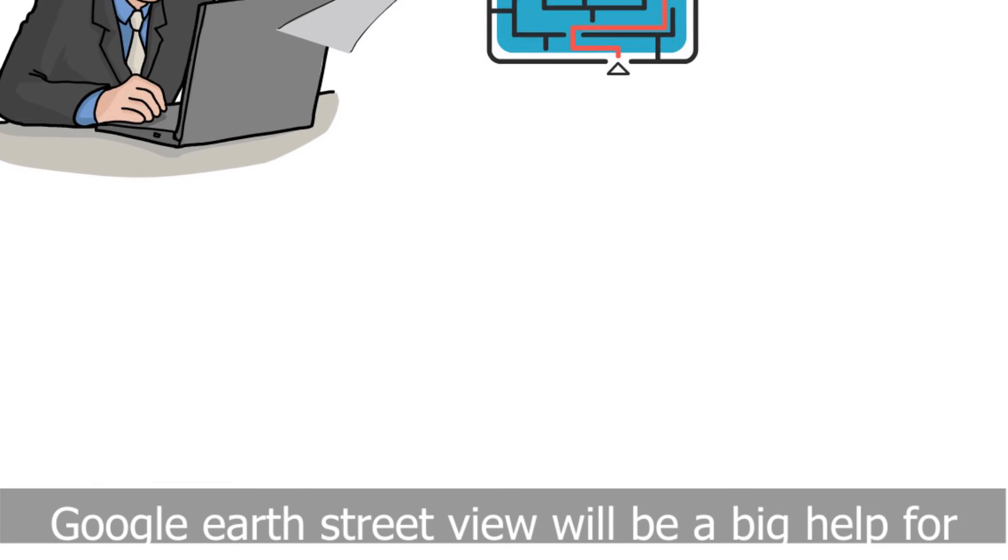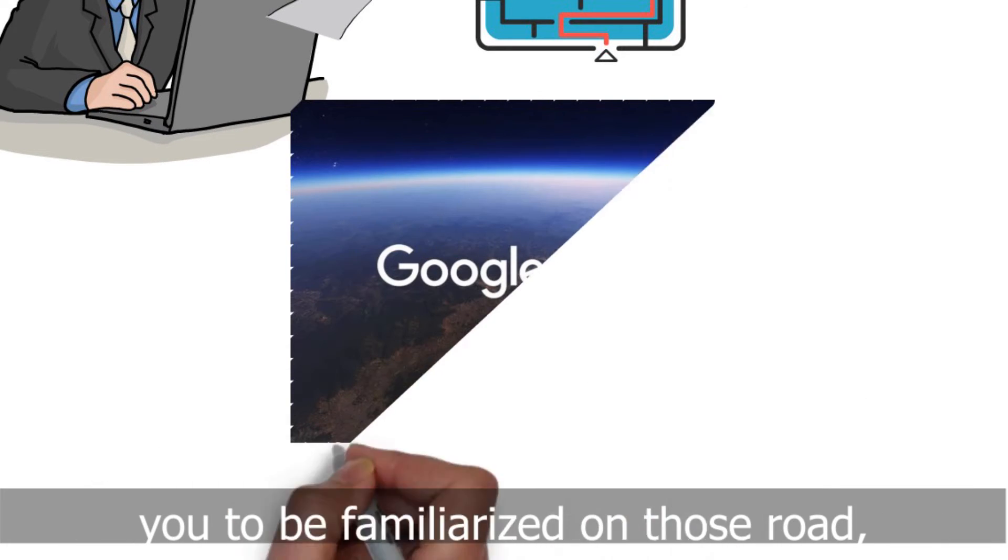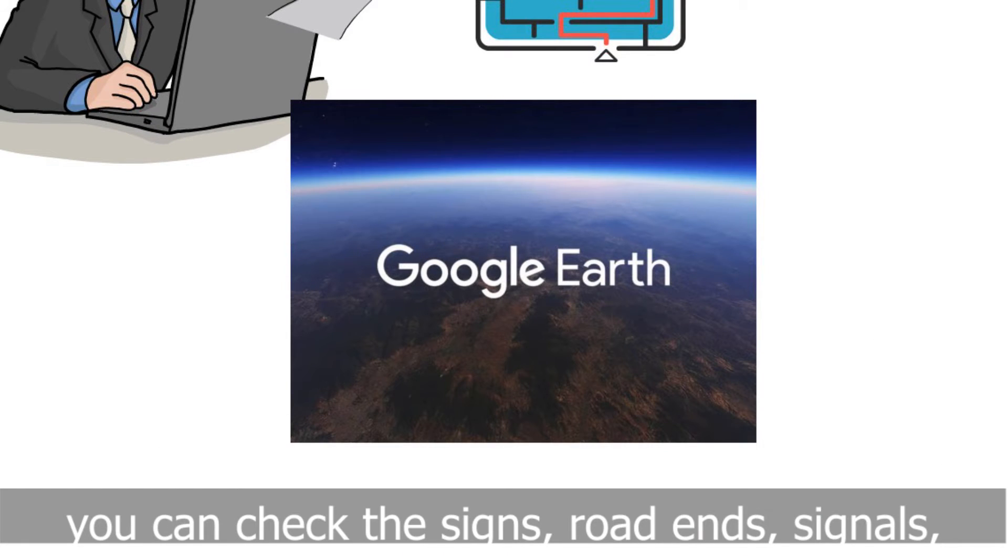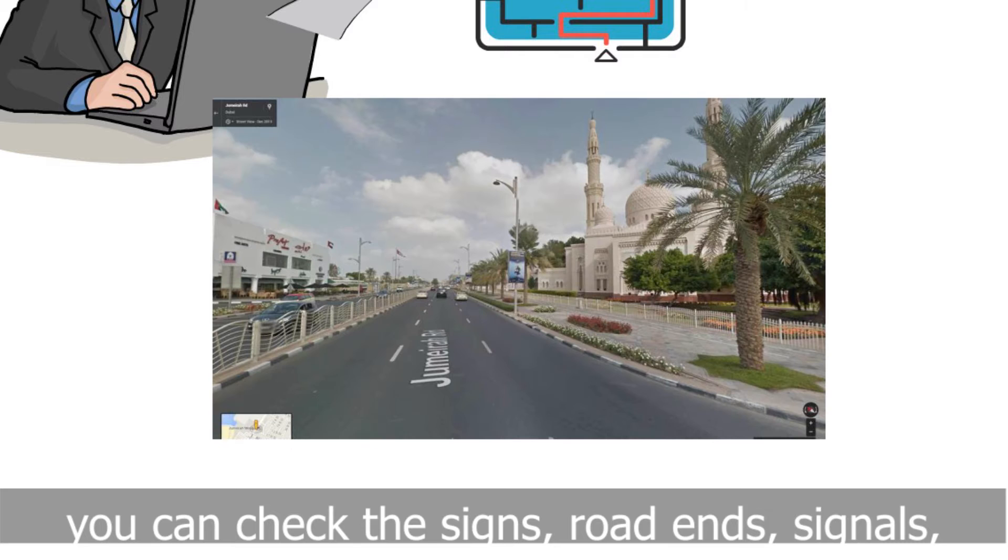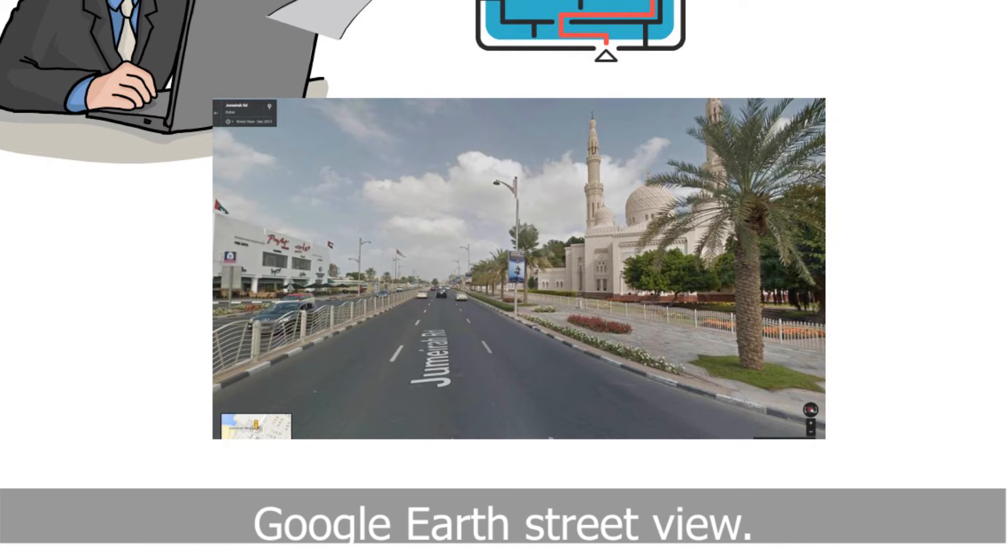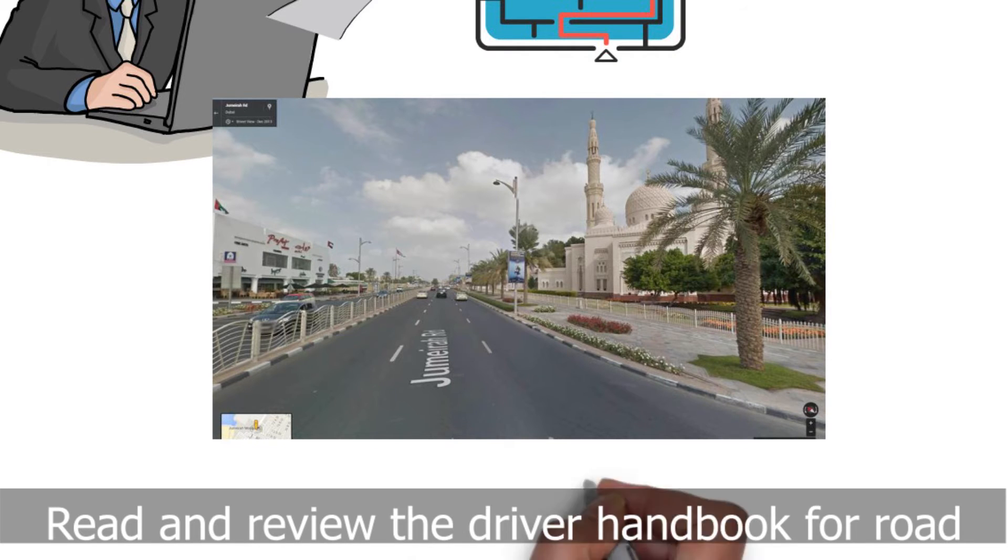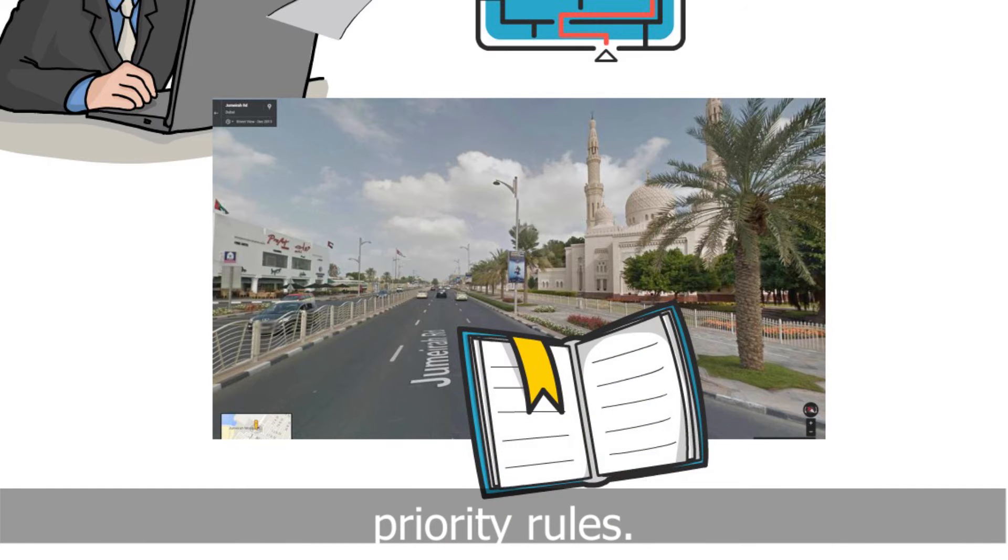Google Earth Street View will be a big help for you to be familiarized on those roads. You can check the signs, road ends, signals, and road markings through Google Earth Street View. Read and review the Driver Handbook for Road Priority Rules.